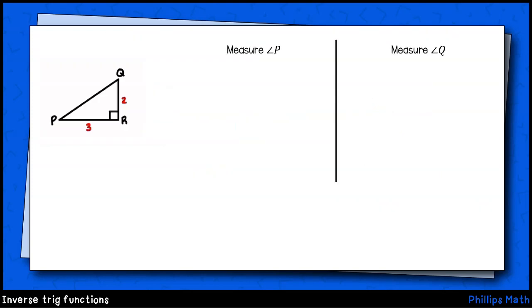Let's set up an equation to find the measure of angle P. We have the opposite and adjacent sides. So we use inverse tangent here. Inverse tangent of two thirds equals P. Our calculator gives approximately thirty three point six nine.